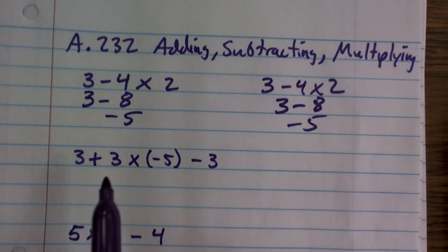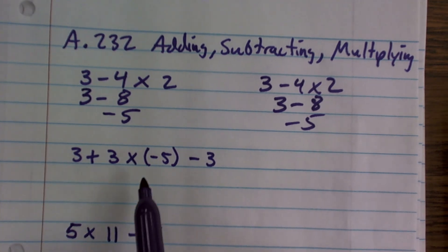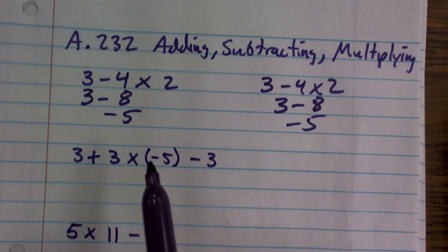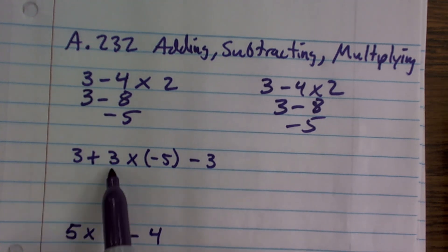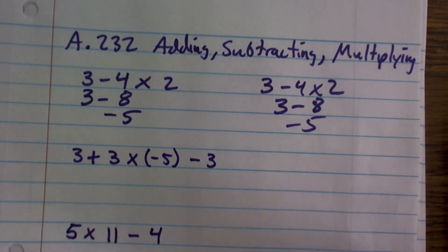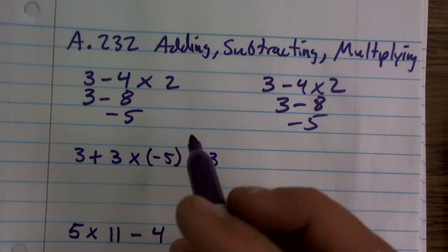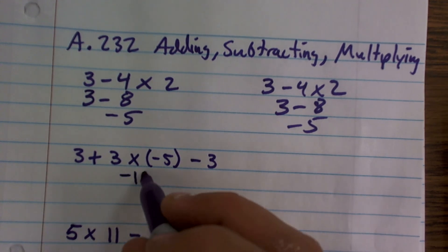So here I have this x. I don't really use the x as a multiplication symbol, but for some reason I wrote it down, so I'm going to use it. So I have 3 plus 3 times negative 5 minus 3. Remember, we've got to multiply here. 3 times negative 5, I'm going to do that first. That gives me negative 15.